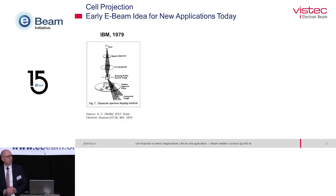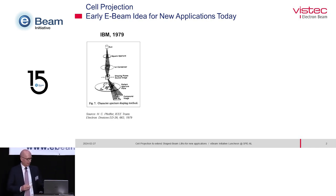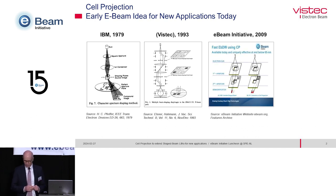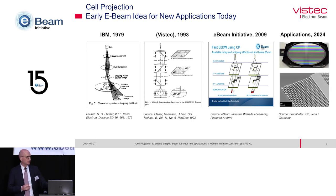Cell projection is a very early technology in the history of variable shaped beam. This is from a publication from IBM from 1979 by Hans Pfeiffer. It was integrated already in the EL1 of shaped beam systems at IBM. Also the variable shaped beam group in Jena in Germany, which is the background of VisTech, used this technology quite early. I took this slide from the introducing presentation of the e-beam initiative, where you can see the Hitachi approach of cell projection, or character projection, which is a synonym at that time. And I want to show you some new applications and how this technology is used nowadays.